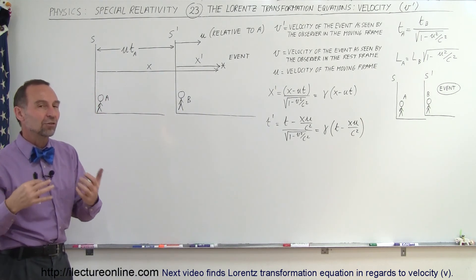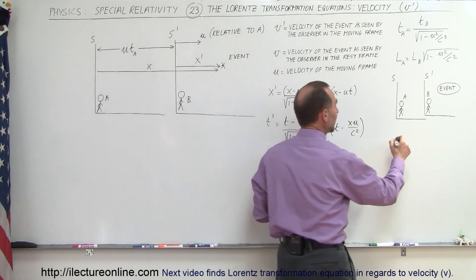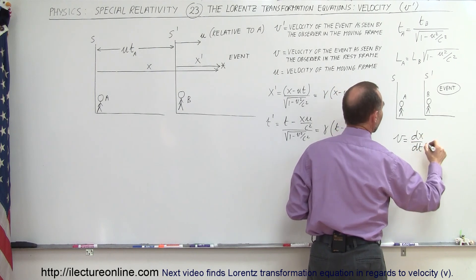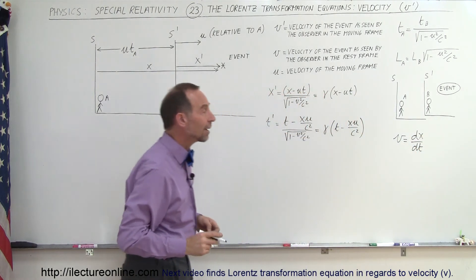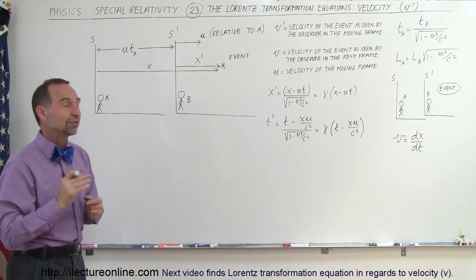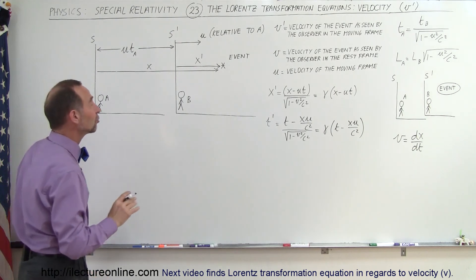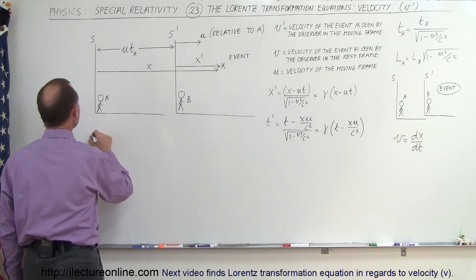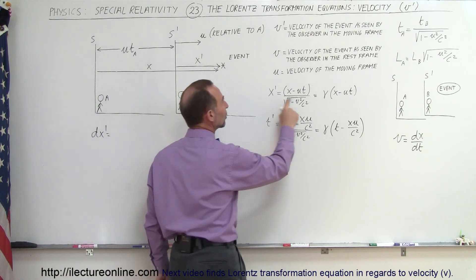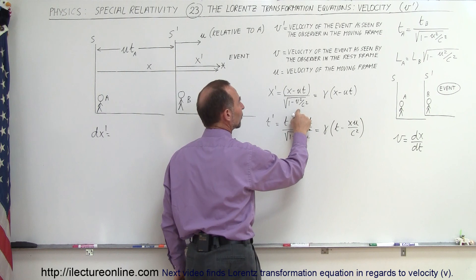So how do we find the velocity transformation equations? Well, it turns out that velocity is equal to the derivative of position with respect to time. So what we can do here is find the derivative of X' and the derivative of T' and divide one by the other, or better yet we can find the differential of X'. DX' is equal to — notice I've written the equation where gamma is 1 over the square root of 1 minus V squared over C squared.